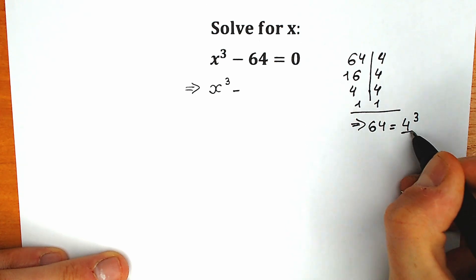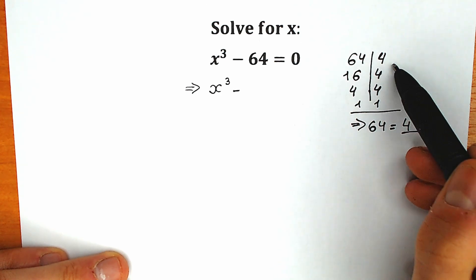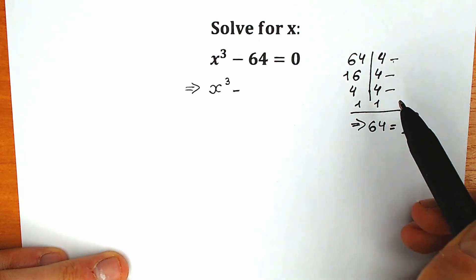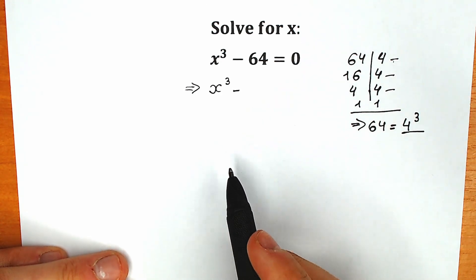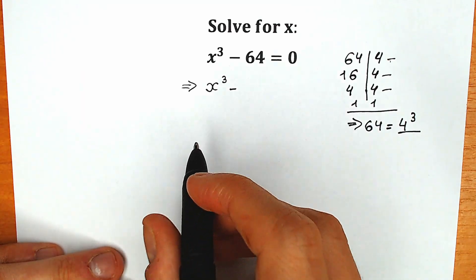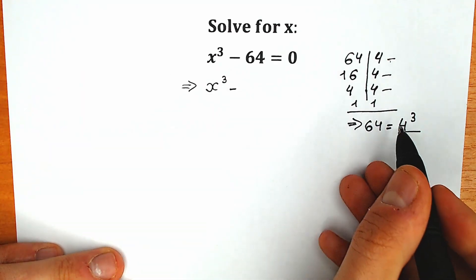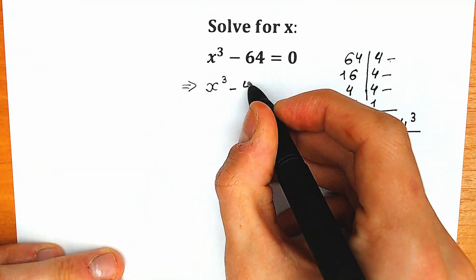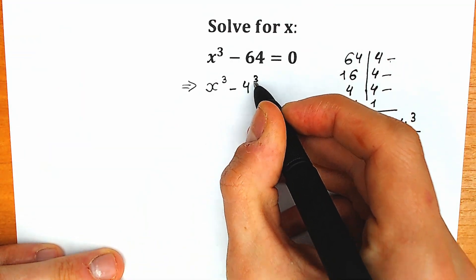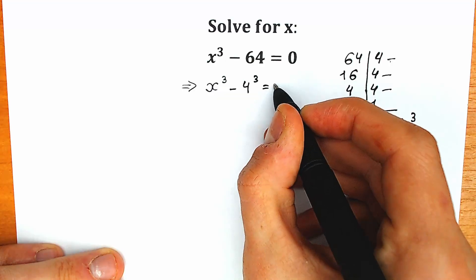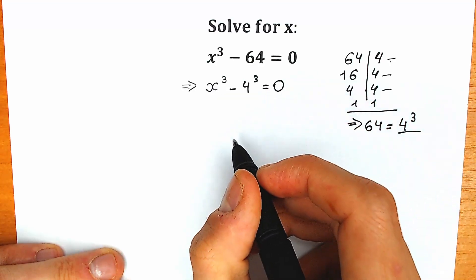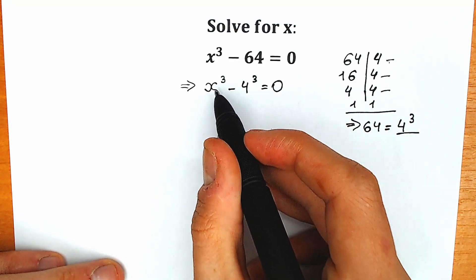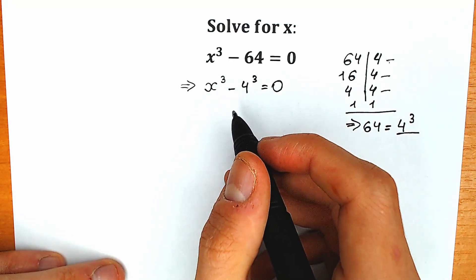In other words, we can write 64 as 4-cube, because we have 4 times 4 times 4, and when we multiply it we get 64. So we have x-cube minus 4-cube equal to 0. And right now let's consider it from another perspective — we have a difference of two cubes.